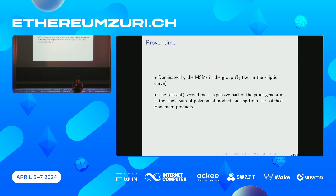The question about performance: how much time would it take? The largest chunk of computational time here is MSM on G1. In a classic SNARK you have FFTs, iFFTs, and multiple MSMs. Here the largest fraction of computational time is MSM, and the second is the Hadamard product calculation.